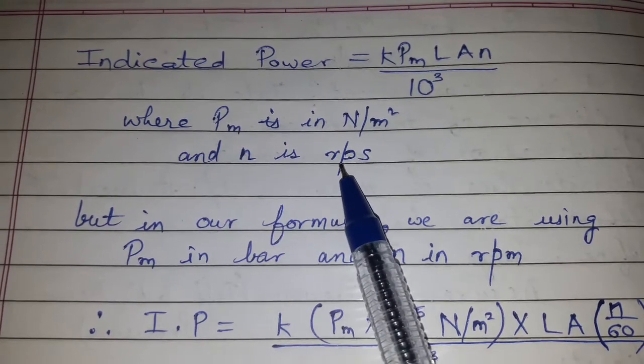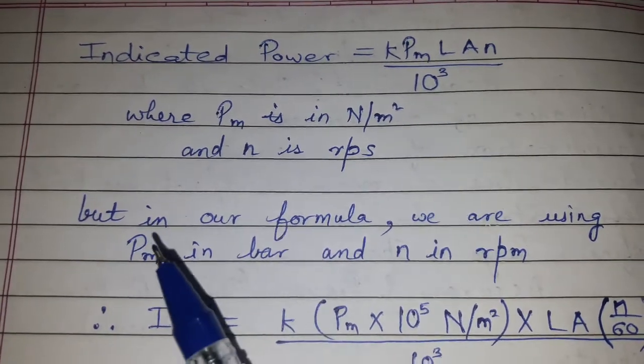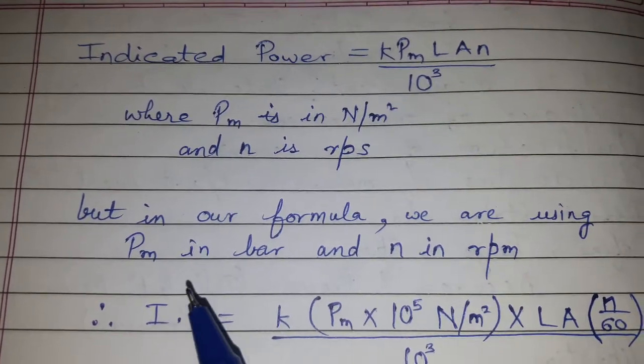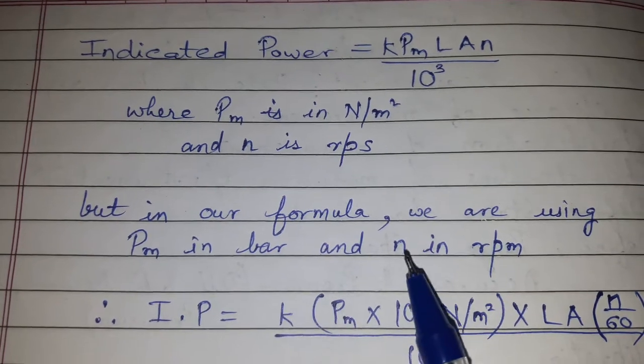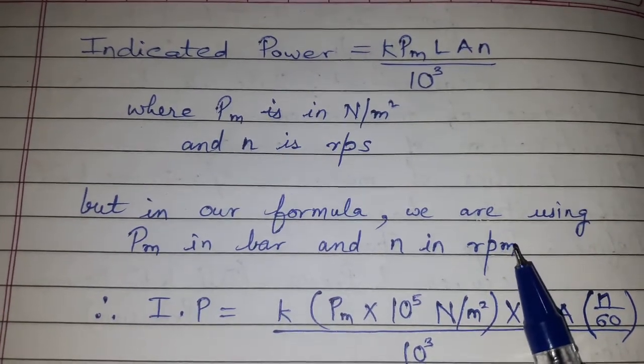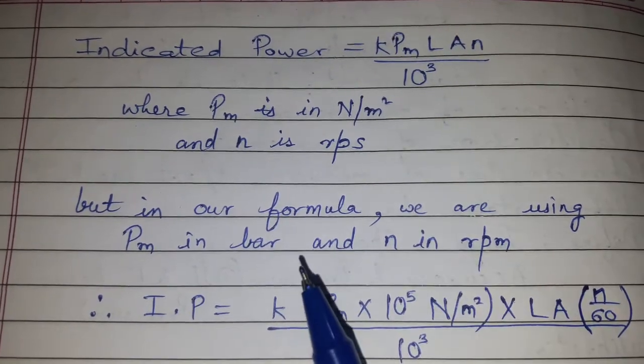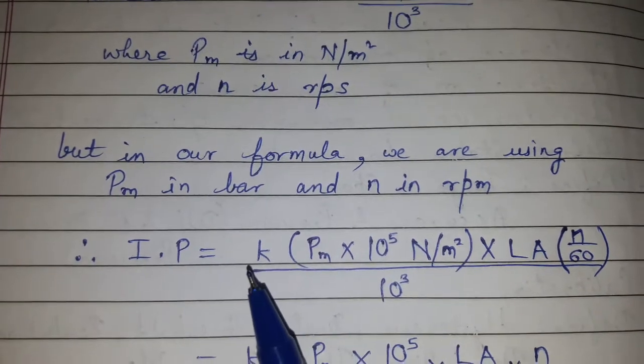But in our formula, we are using Pm directly in bar and n directly in rpm. That's why it has to be converted to N/m² based on the original formula.